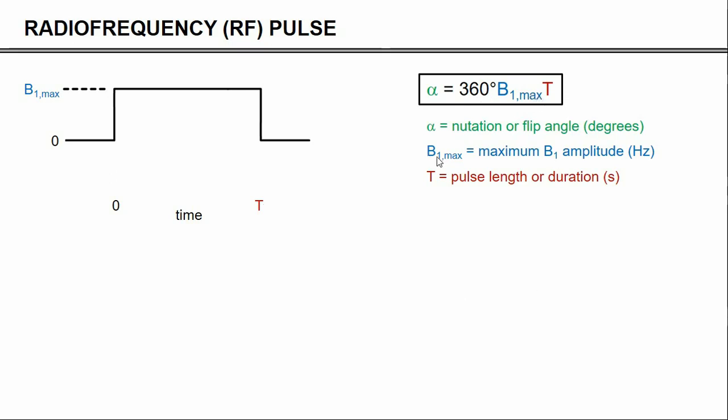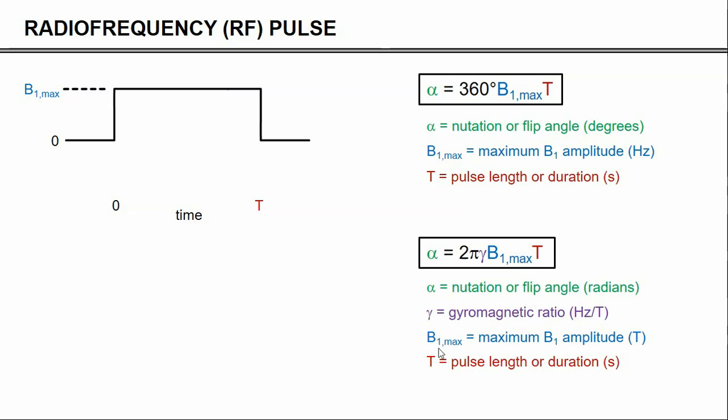Now, some people don't like using B1 in hertz. You can also convert it to B1 in Tesla or microtesla by basically inserting the gyromagnetic ratio in front of it. And so these equations are equivalent. Let's run some numbers through it. So let's say we have a maximum B1 of a thousand hertz, which equals 23 and a half microtesla for protons using this conversion here. If we want to now have an excitation of 90 degrees, then using either one of these equations, you can calculate that the duration of the pulse needs to be 250 microseconds. And so these two equations give you a good handle on amplitude versus duration.